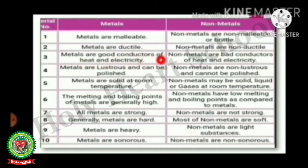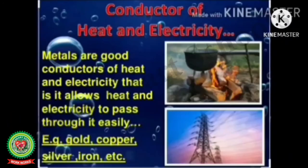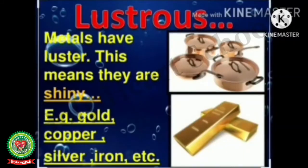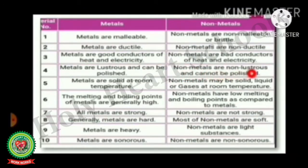Metals are good conductors of heat and electricity — metals allow heat and electricity to pass through them easily. Examples of metals include gold, copper, silver, and iron. Non-metals are bad conductors of heat and electricity. Metals are lustrous, meaning shiny, and can be polished — examples include gold, copper, iron, and silver. Non-metals are non-lustrous; they have a dull appearance and cannot be polished.